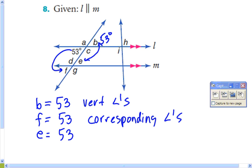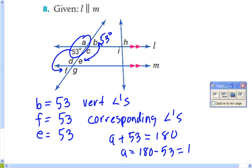Now, A and 53, that's a pair of supplementary angles. So A plus 53 is equal to 180. A is equal to 180 minus 53, which is 137. Actually, I think I did my math wrong. 127. So A is 127.